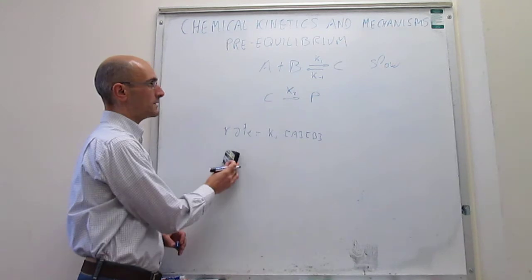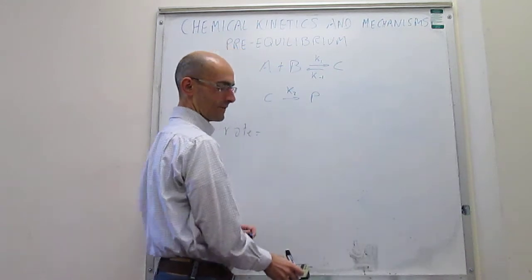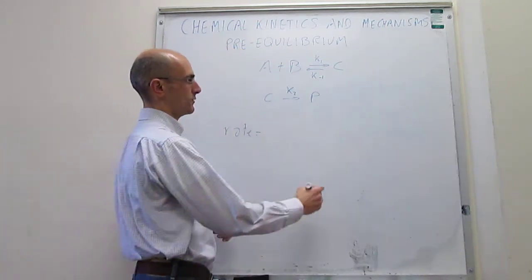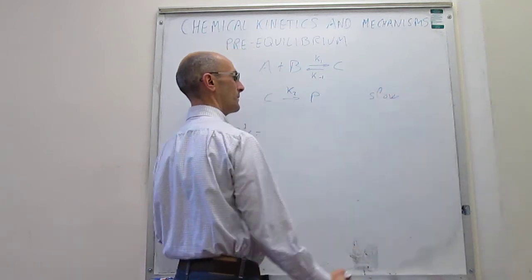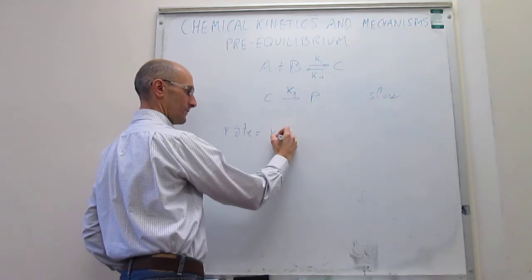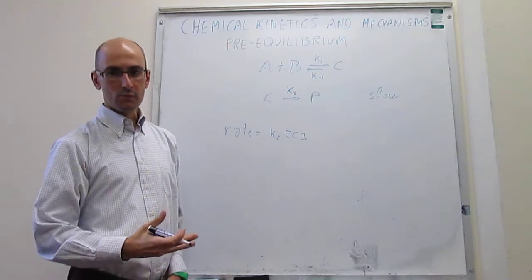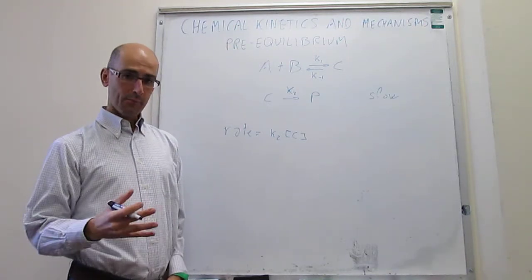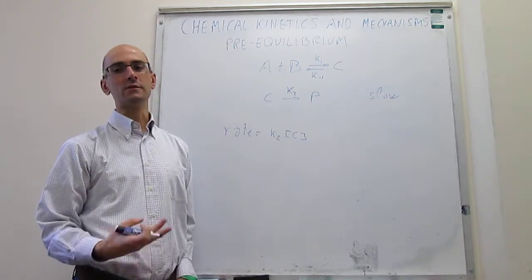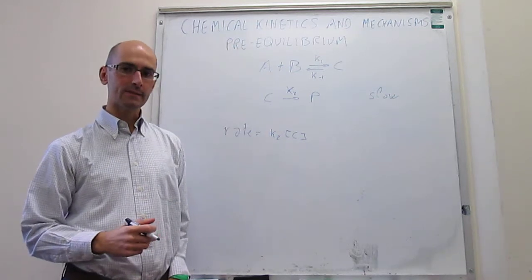Now, the novelty of this, what we're trying to explain, comes when we try to analyze what happens under the second scenario, which is when the second step is the slow one. Under those circumstances, the rate law is K2 multiplied by the concentration of the intermediate C. But the problem is that this cannot be our final rate law because that depends on the concentration of an intermediate, and intermediates cannot appear in rate laws.